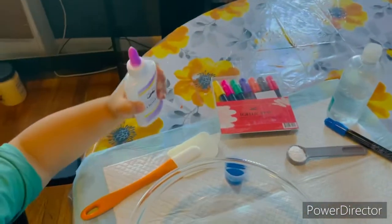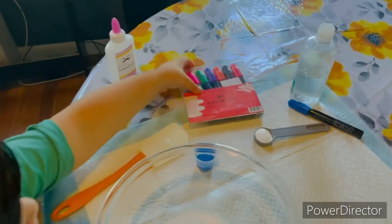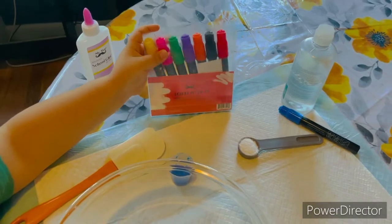You get Mr. Pen glue, and then you get Mr. Pen acrylic markers. Use it to give your slime some color.